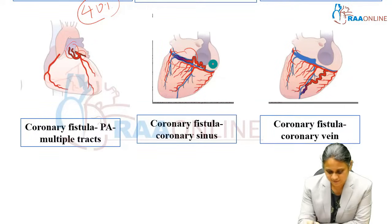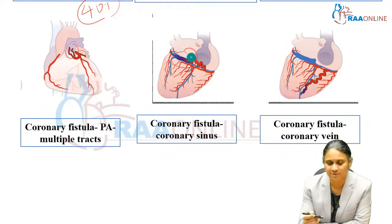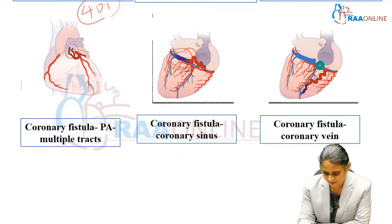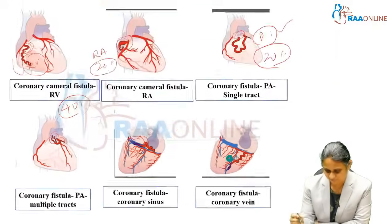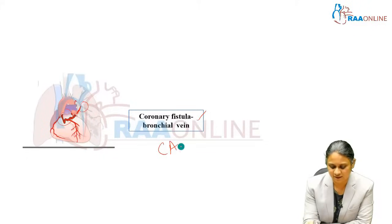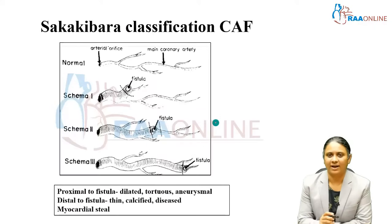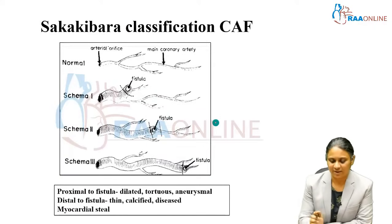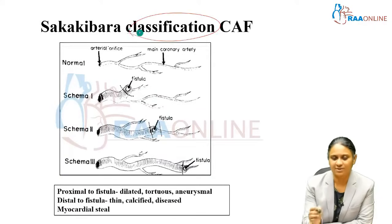The blue structure shown is the coronary sinus. The fistula's tract here is tortuous and dilated, and can sometimes become aneurysmal due to the volume it carries to the coronary sinus. There is also a tract to other cardiac veins. A very abnormal presentation is a coronary fistula from the left coronary origin toward the bronchial vein — this is also a coronary arteriovenous fistula.